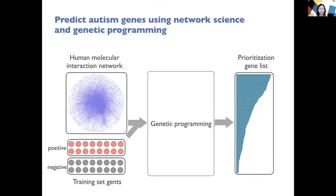The first step of this project is to construct a human molecular interaction network. This network serves as a map describing the pattern of interactions among the entire genome in humans. Once we have this network, we collected two sets of genes: a positive set containing all well-known autism genes as positive training cases, and a negative set containing genes well-known to have no association with any neurological diseases or disorders.